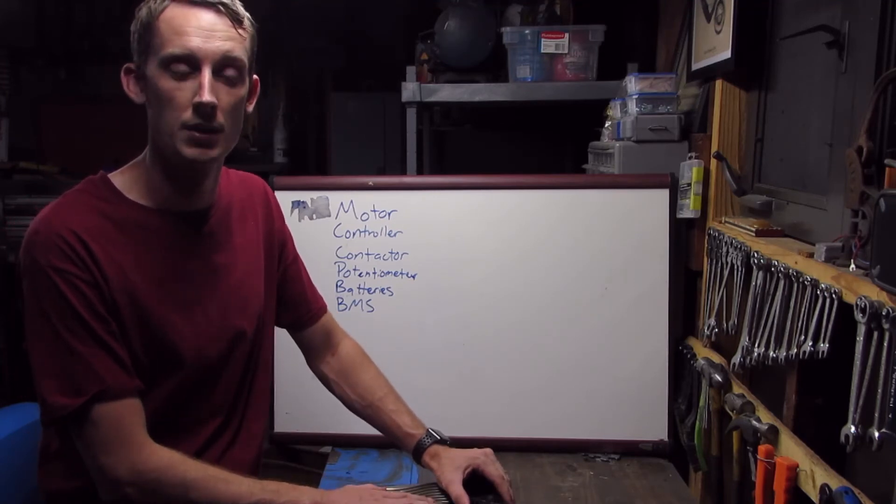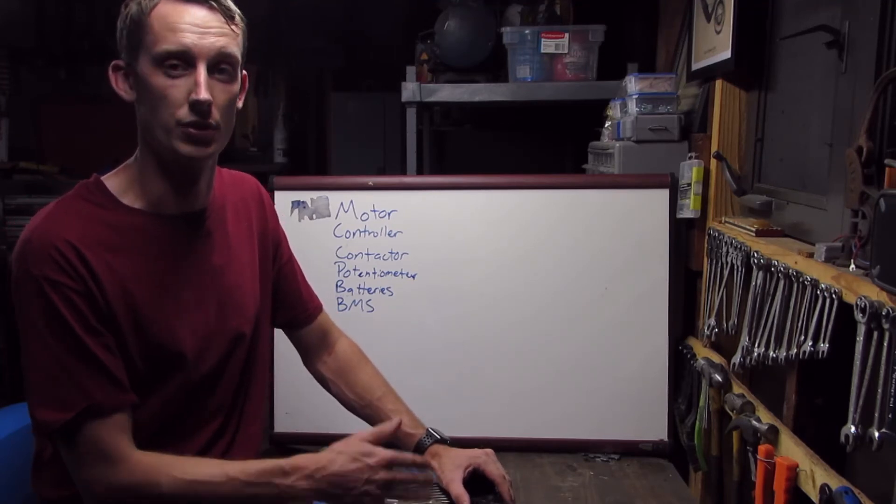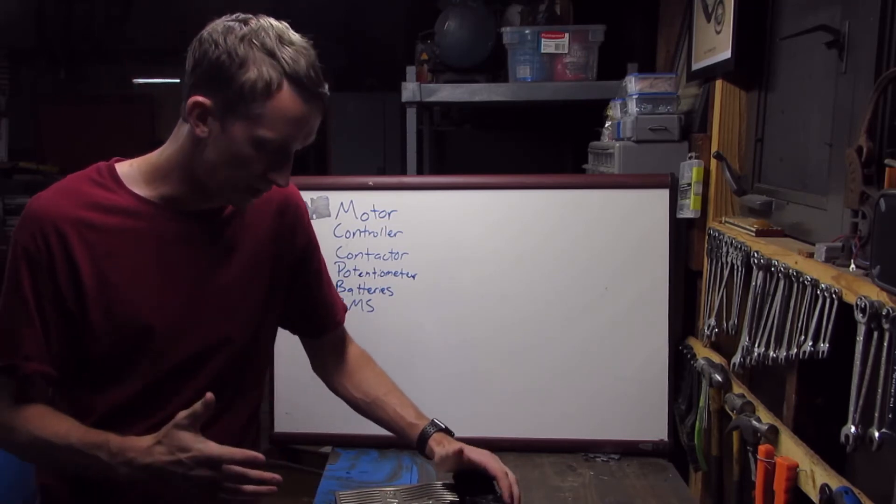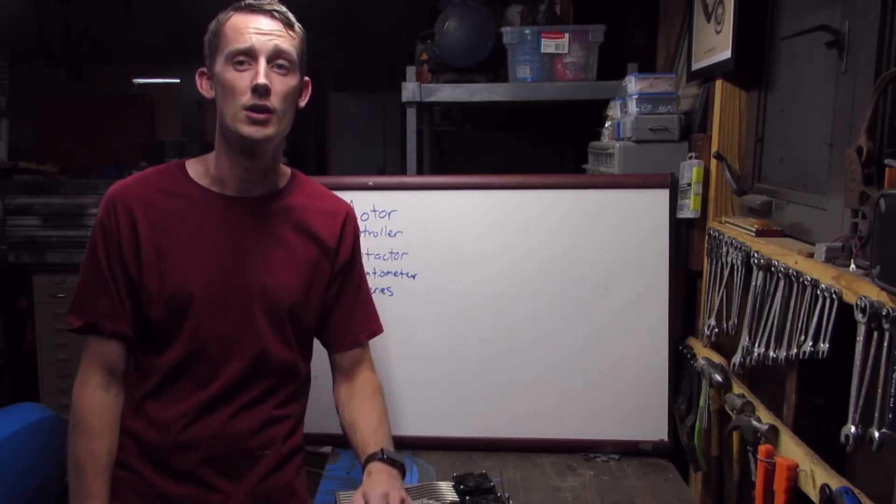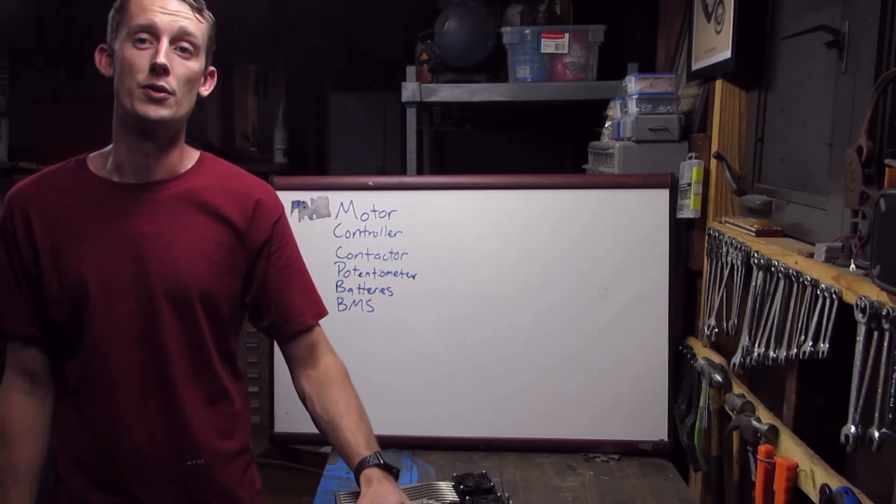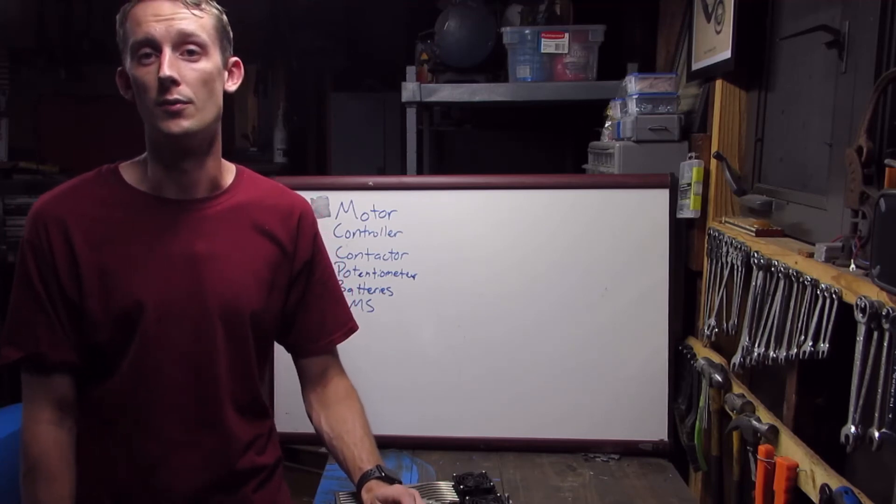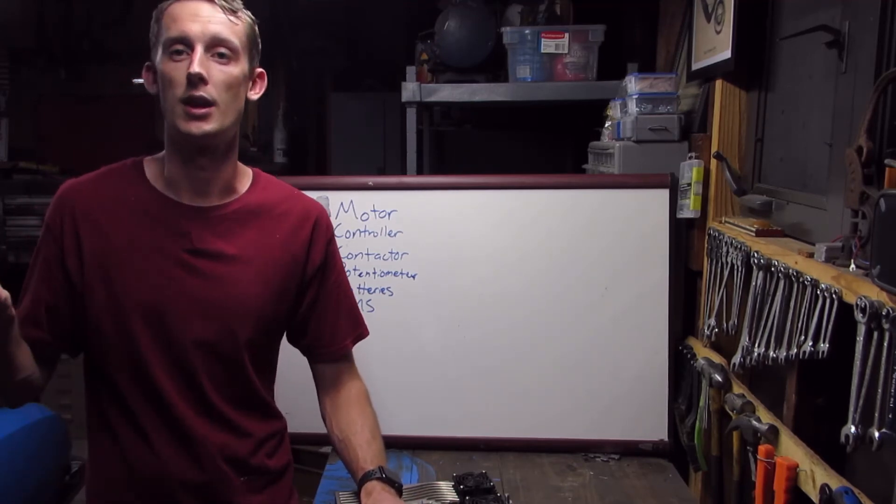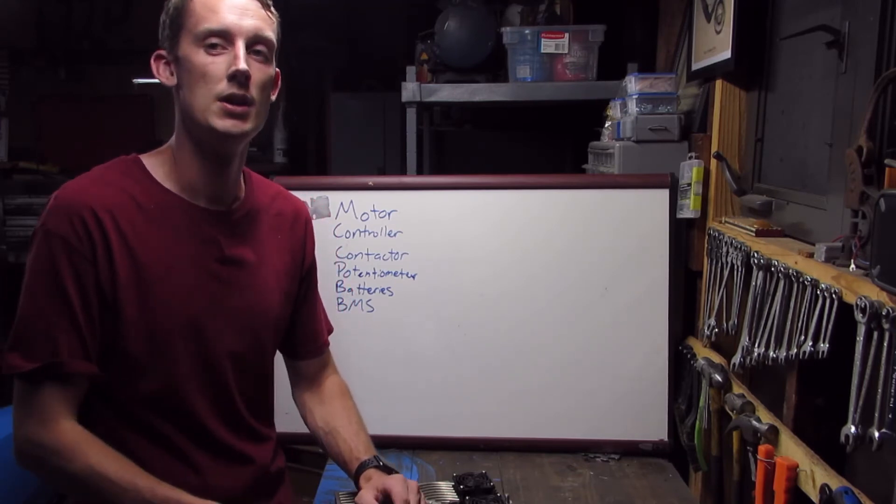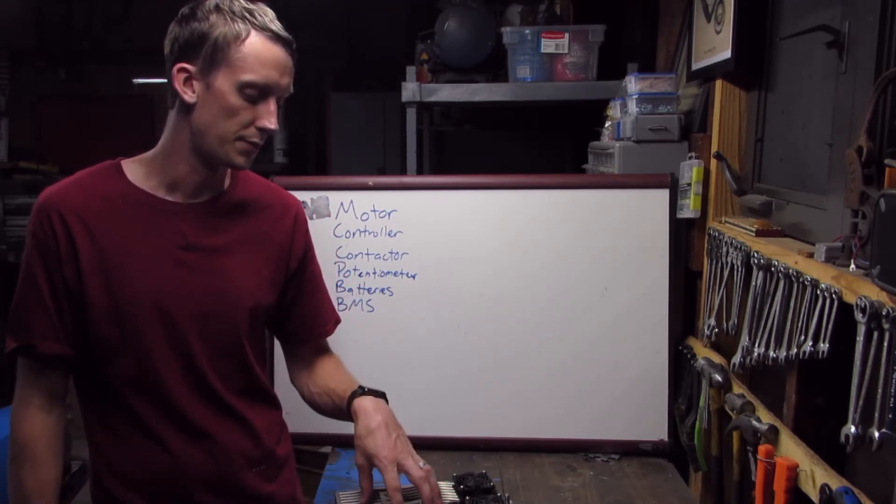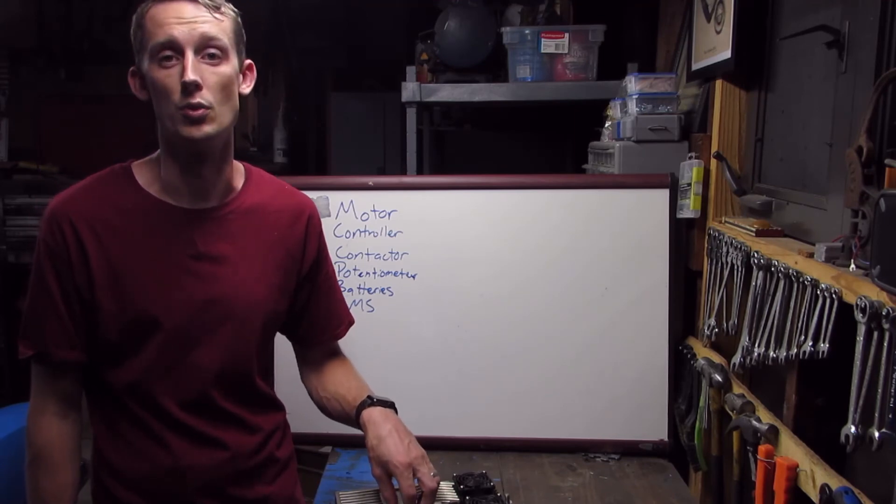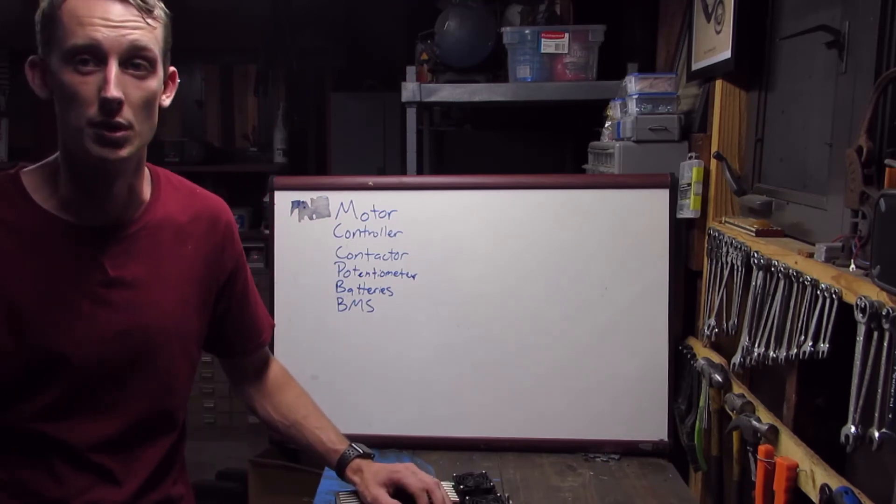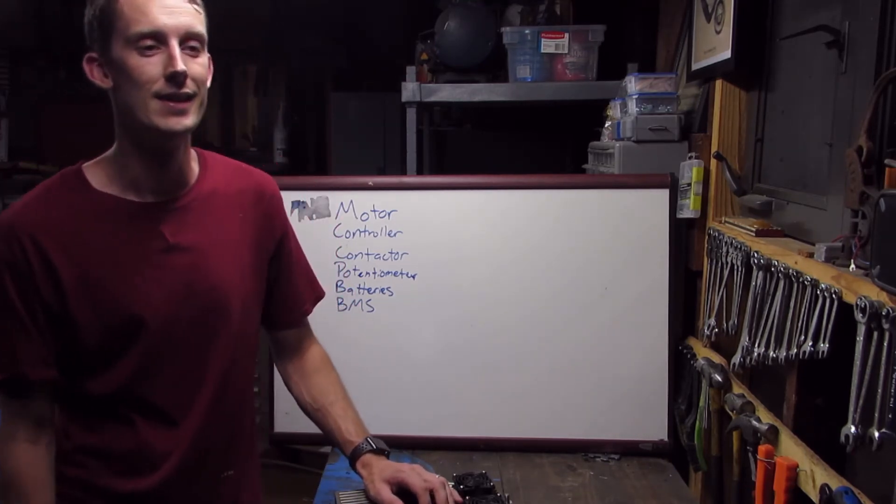When it comes to controllers, I heard this from a reliable source: you want to try and stay away from the golf cart controllers, the Curtis and the ones like that for bigger projects like this. Now if you're trying to make something like a little electric go-kart or something like that, by all means go for it. Those are rated for 72, 60 volt systems, but they're not designed to handle this big for so much time.